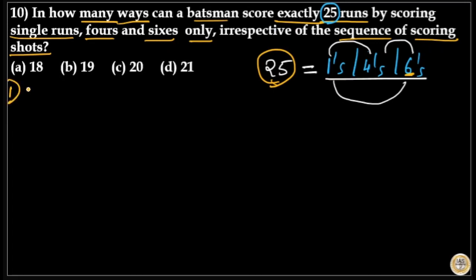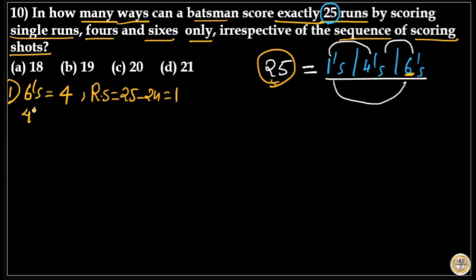In the first case, I will take the number of sixes as maximum — that is four, because 4 times 6 equals 24. So the remaining score will be 25 minus 24, which equals 1. That means the number of fours will be 0, and the number of ways will be 1 — because the batsman can score four sixes and one single, which totals 25 runs.